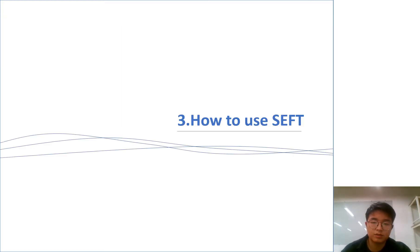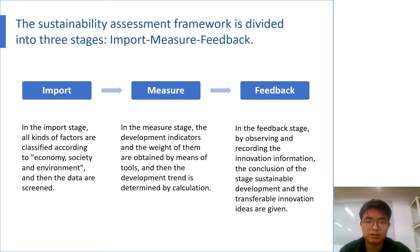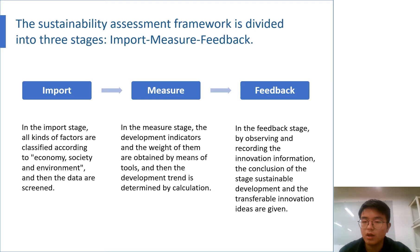The third part is how to use SEFT. SEFT can be divided into three stages: import, measure, and feedback. In the import stage, all kinds of factors are classified according to economy, society, and environment, and then the data are screened. In the measure stage, the development indicators and their weights are obtained by means of tools, and then the development trend is determined by calculation. In the feedback stage, by observing and recording the innovation information, the conclusions of the stage's sustainable development and the transferable innovation ideas are given.